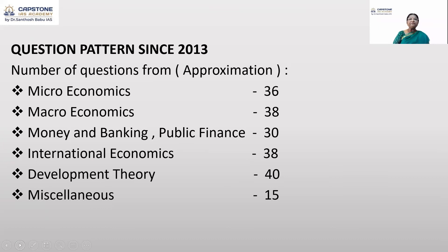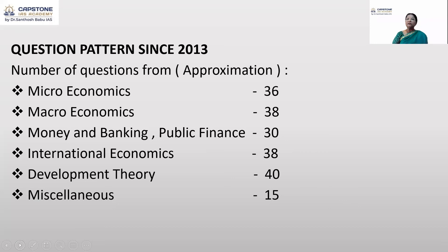What do we infer from this brief analysis of the question pattern? There are two highlights. First, go for a balanced approach in your preparation. Second, give equal weightage to all the topics mentioned in the syllabus. So the two key inferences are: adopt a balanced approach and assign equal weightage to all areas in the syllabus.